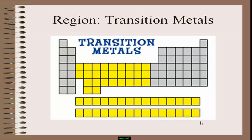Between the S block and P block elements, there are transition metals. The elements marked in yellow color are transition metals. The properties of these transition elements lie between S block and P block because of this positioning.